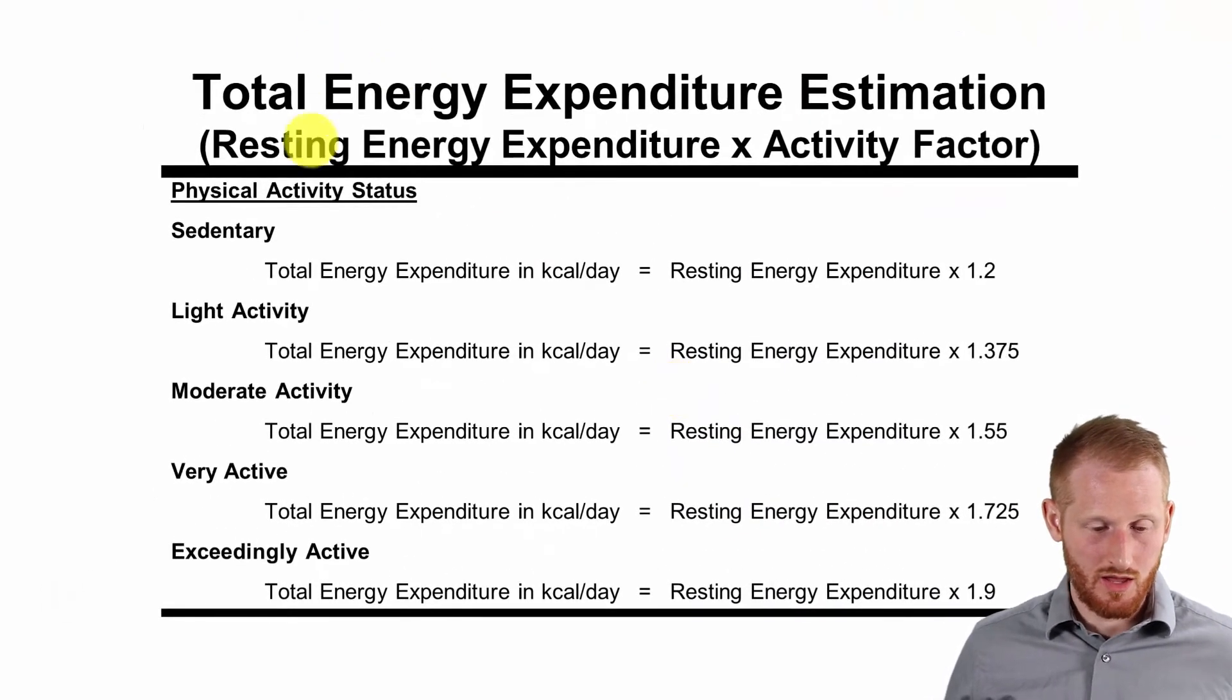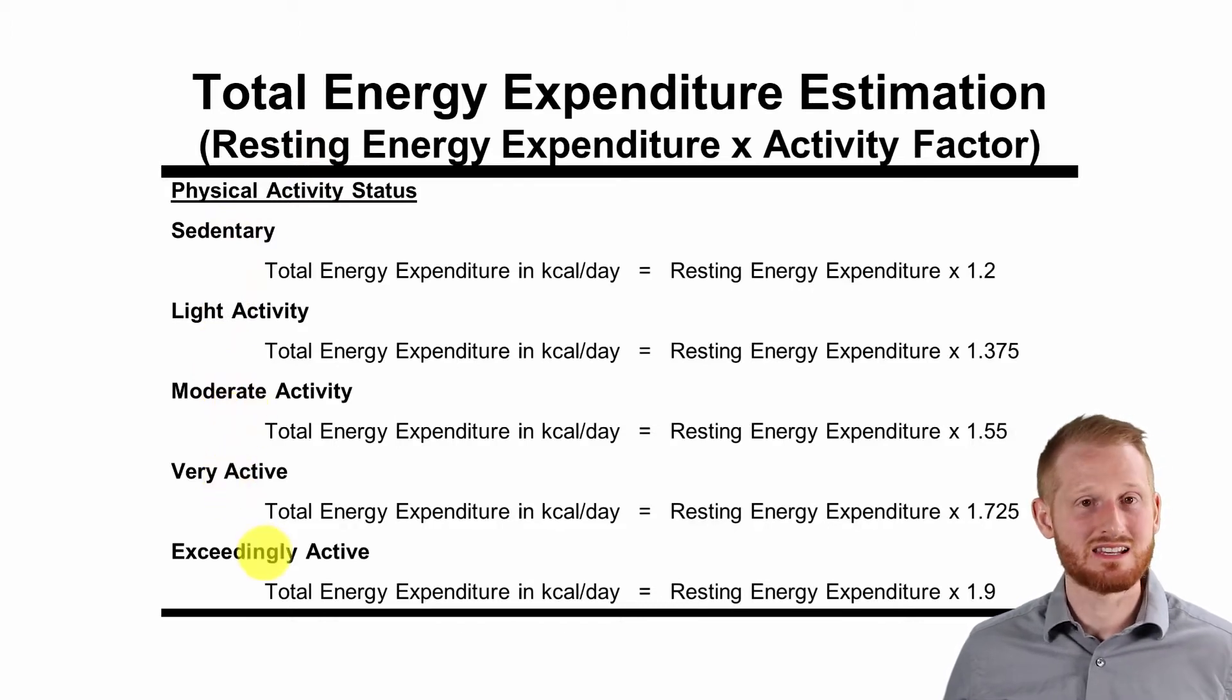So we have sedentary, light activity, moderate activity, very active, and exceedingly active. And we have our activity factors here at the end. So sedentary basically means you don't do anything physically active unless it's just walking from one side of your bedroom to the other, getting up to go to the bathroom, getting up to get something to eat out of the refrigerator. That's being sedentary. The activity factor there is 1.2.